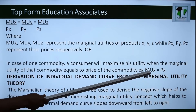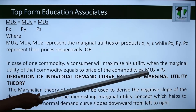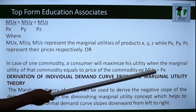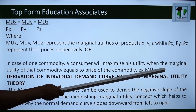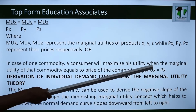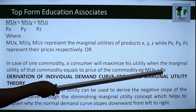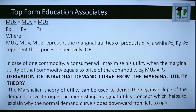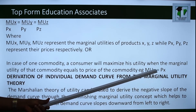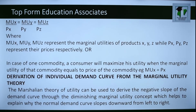For commodity X, utility is maximized where the marginal utility of that commodity equals the price. If marginal utility is more than the price, the consumer will continue to buy. But when MU decreases to the point where the price exceeds satisfaction received, the consumer will buy less. Utility is maximized where MU equals price.